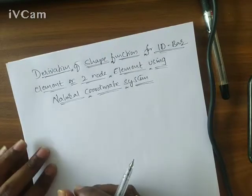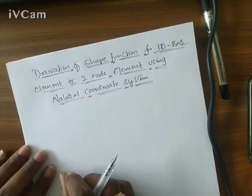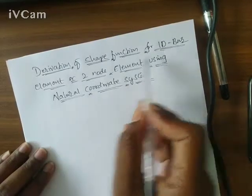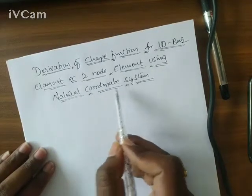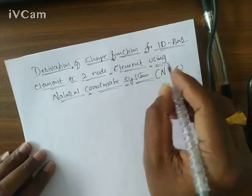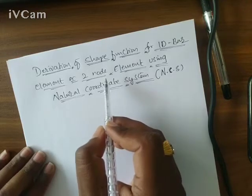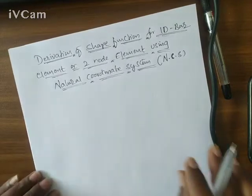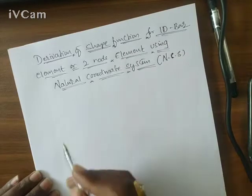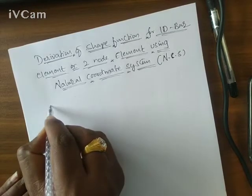This is Lecture 2 in the Finite Element Method course. Today I'm going to explain how to derive shape functions for a 1D bar element using the natural coordinate system, which in short can be called NCS. A 1D bar element is also called a two-node element. First, let me write down the sketch for the 1D bar element.